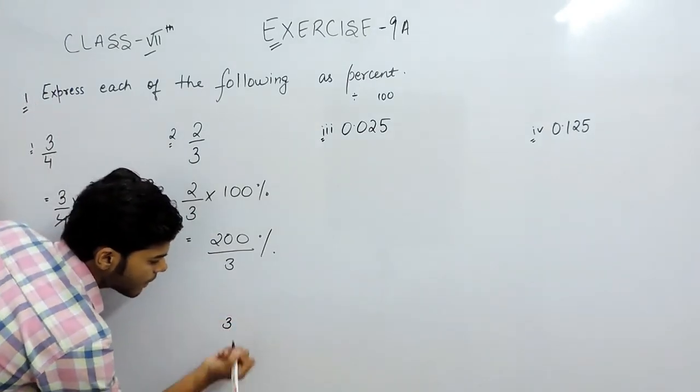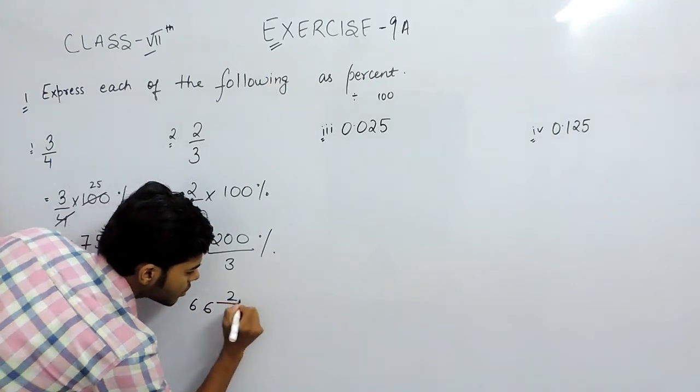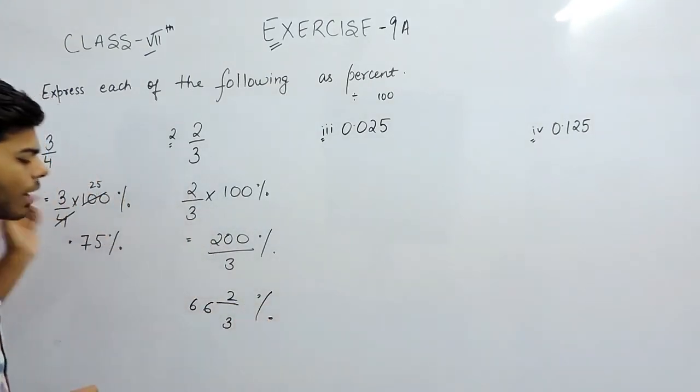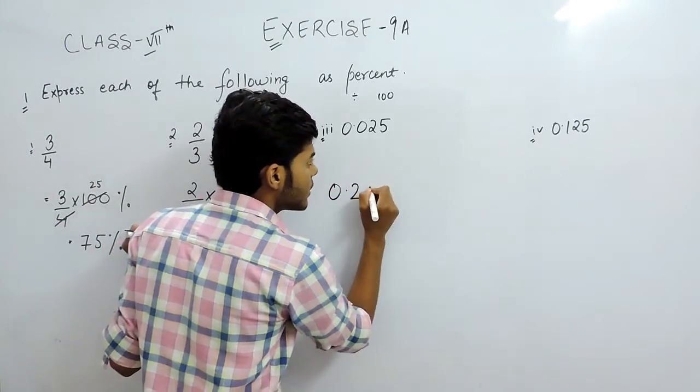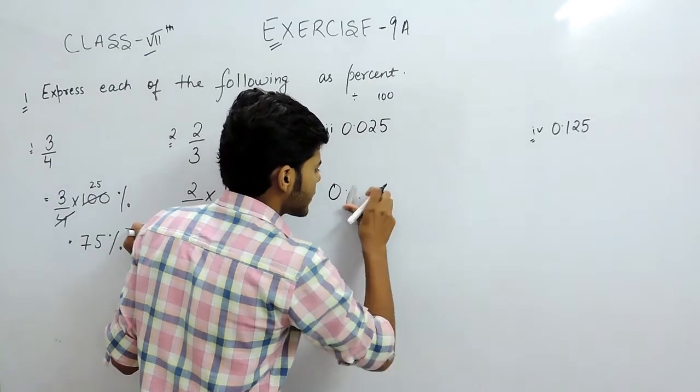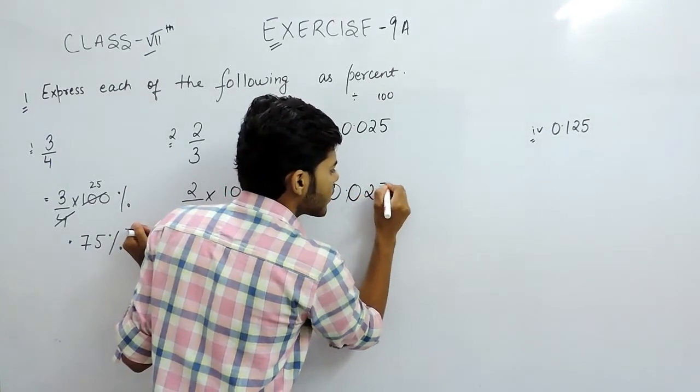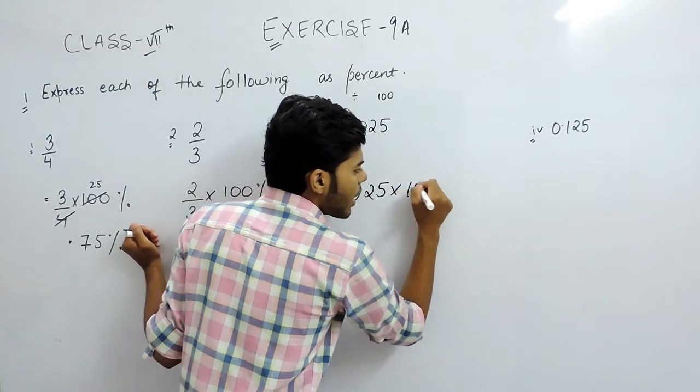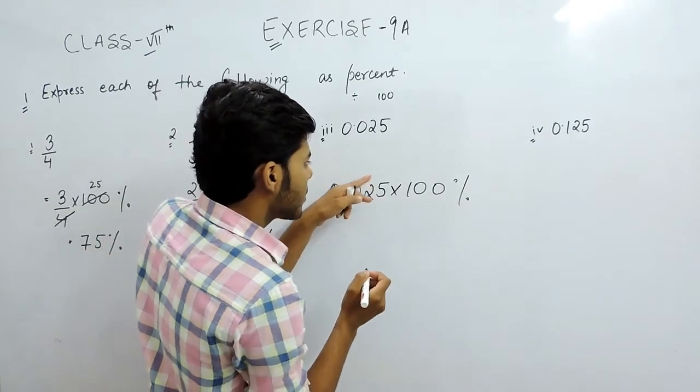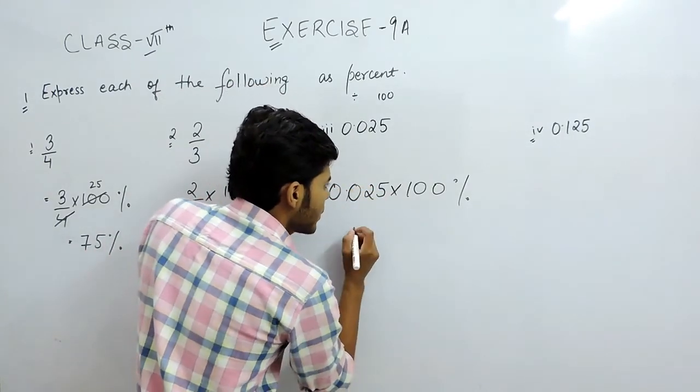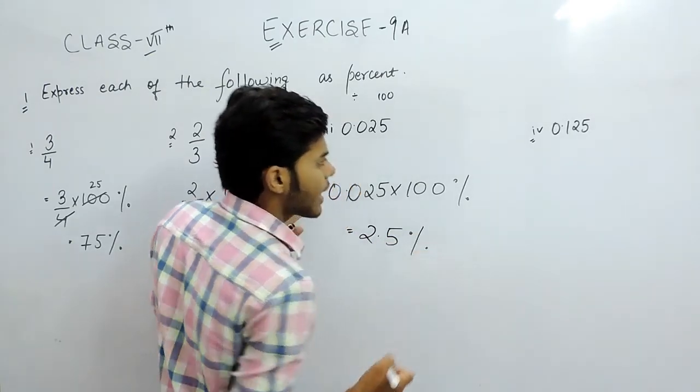This one, we also multiply with 100 percent. 0.025 multiplied with 100 percent - the decimal will be shifted towards right by two places, so our answer will be 2.5 percent.